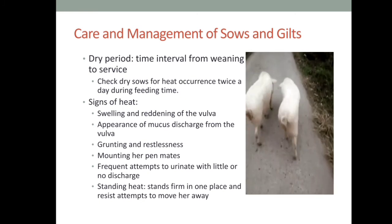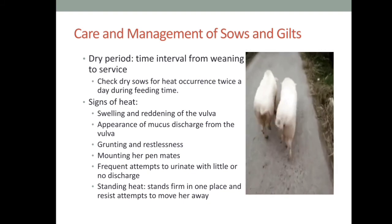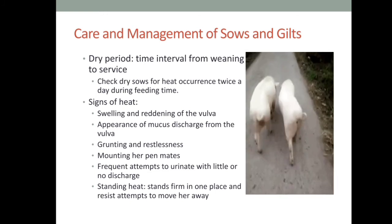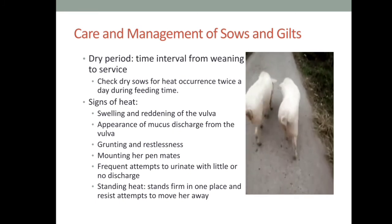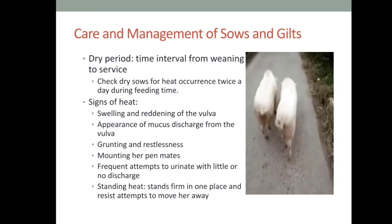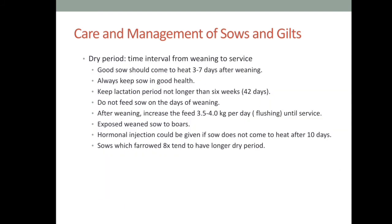The dry period is the time interval from weaning to service. Signs of heat in sows include: swelling and reddening of the vulva, appearance of mucus discharge from the vulva, grunting and restlessness, mounting pen mates, frequent attempts to urinate with little or no discharge, and standing heat — standing firm in one place and resisting attempts to move. A good sow should come into heat 3 to 7 days after weaning. Keep the lactation period no longer than 6 weeks. After weaning, increase feed to 3.5 to 4 kilograms per day until service. Expose weaned sows to boars to stimulate breeding. Give hormonal injection if sows do not come in heat after 10 days.